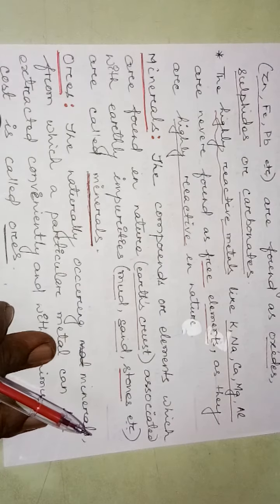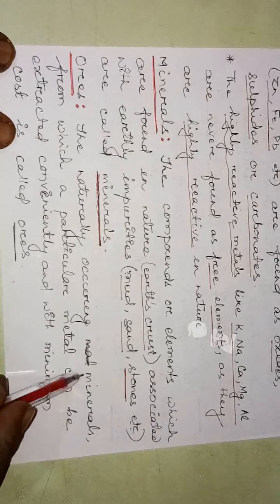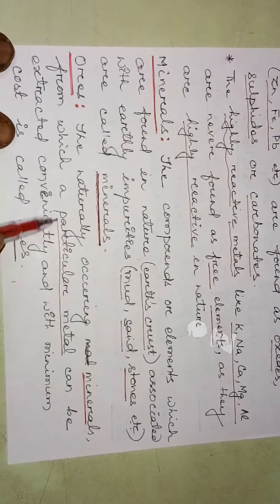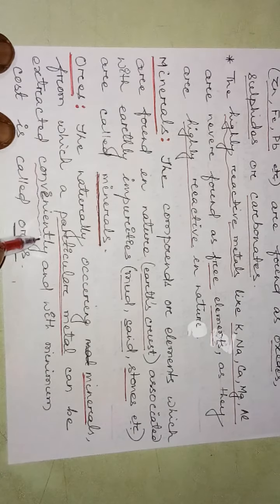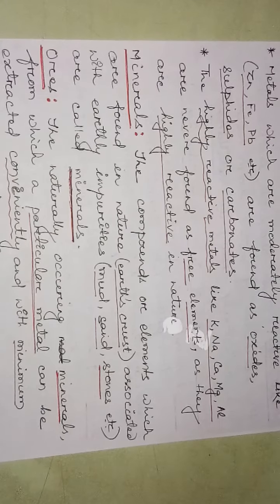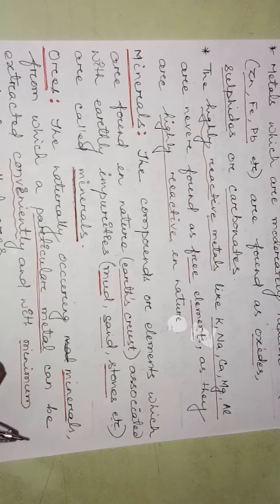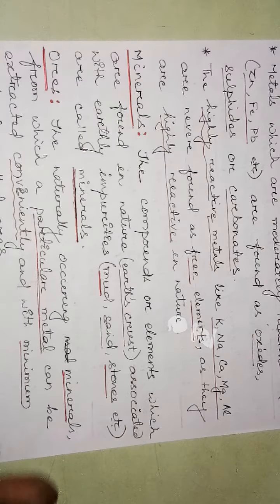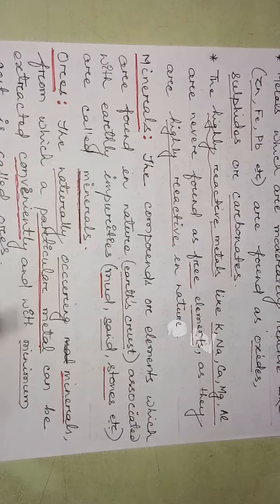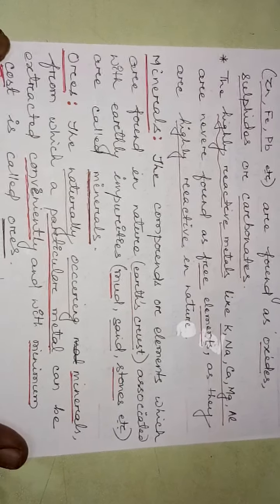What is the difference between ore and minerals? Ore is a naturally occurring mineral from which a particular metal can be extracted conveniently, easily, and with minimum cost — that is, economically. Not all minerals are useful to extract a particular metal; sometimes the percentage of metal is very less and impurities are more. The mineral from which a metal can be extracted conveniently and economically is called an ore.